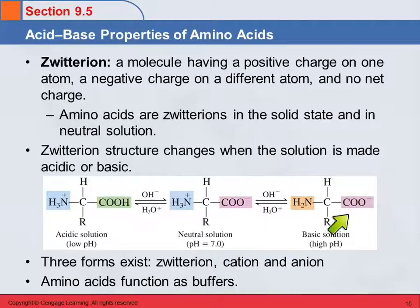So we've got three forms. This is the anion, the zwitterion, which has both on the same molecule, and the cation. And because of this, amino acids can function as buffers, and this is one of their functions.